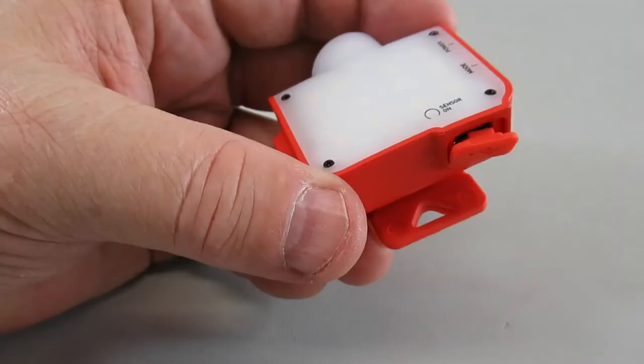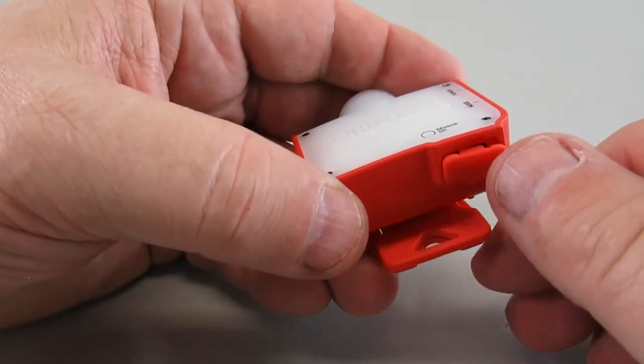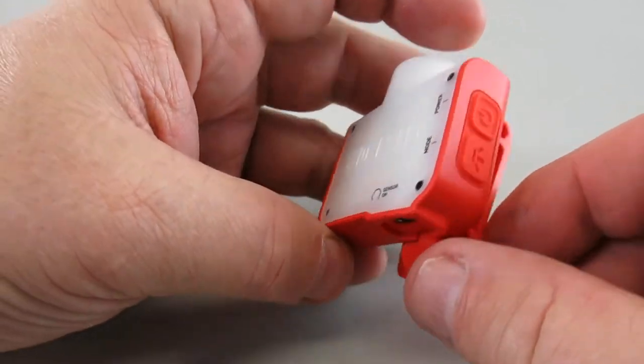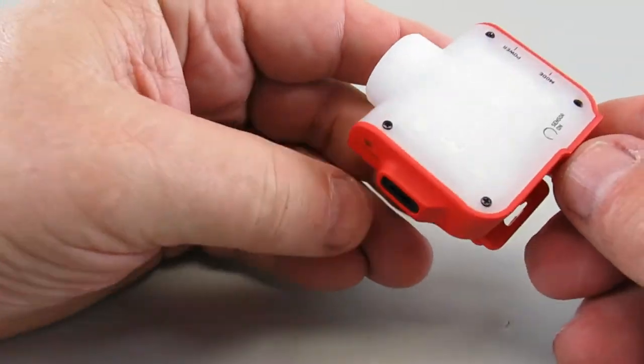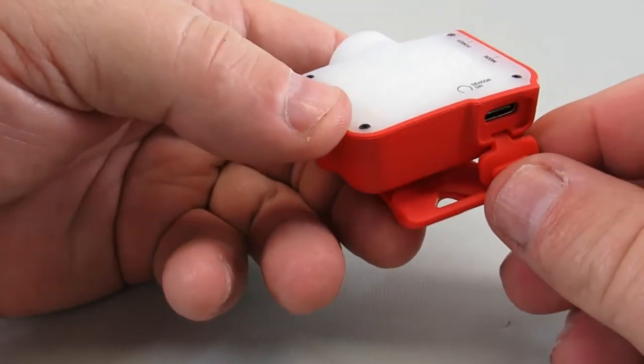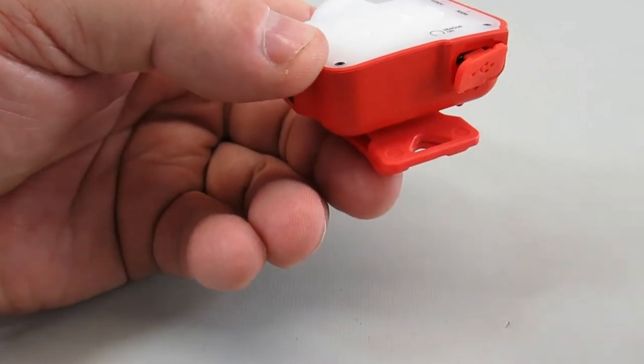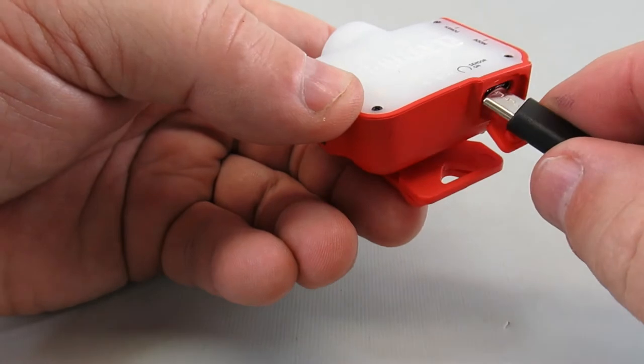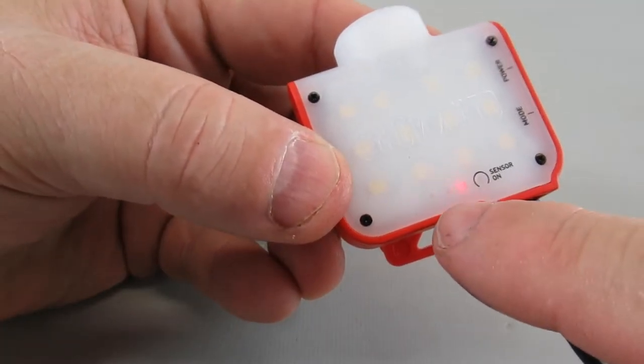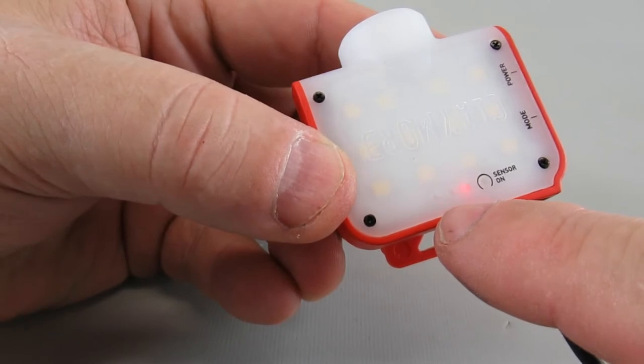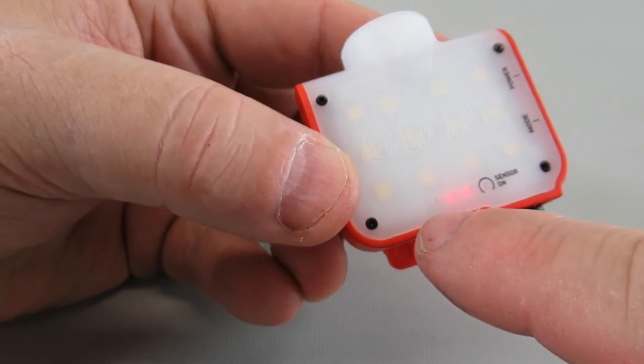To charge it, you plug in through the USB-C connector. The whole thing is pretty well sealed. You probably can't submerge it, but it would be protected from rain. As it's charging, you can see the level blinking, eventually going to the third LED.